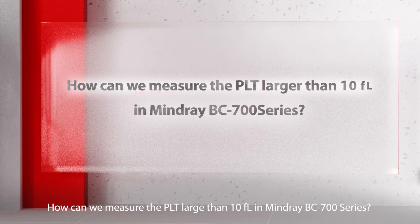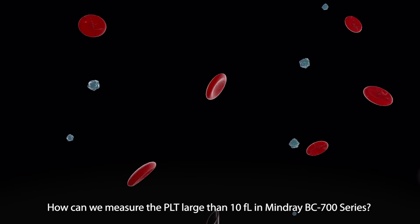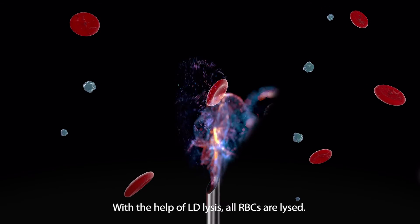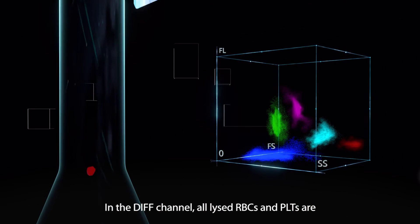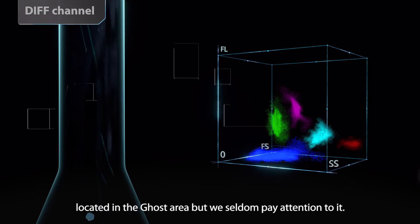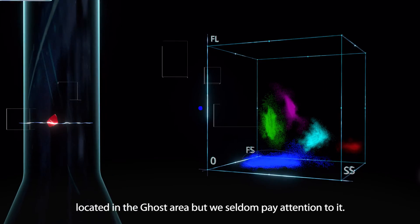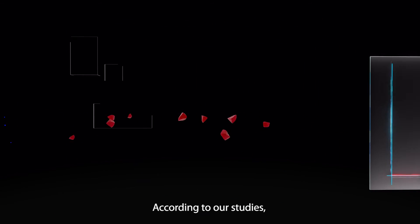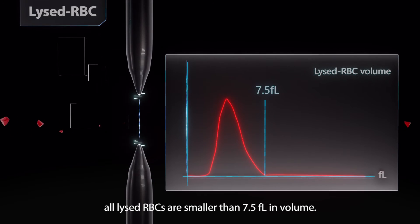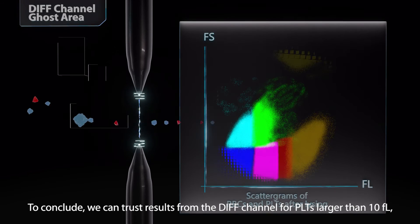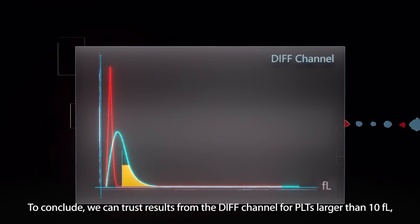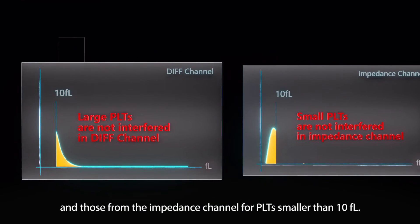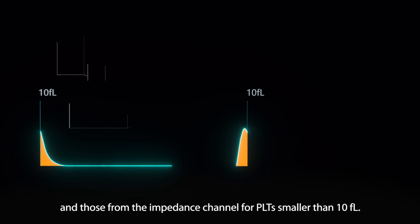How can we measure PLTs larger than 10 femtoliter in MINDRAY BC700 series? With the help of LD lysis, all RBCs are lysed. In the diff channel, all lysed RBCs and PLTs are located in the ghost area, but we seldom pay attention to it. According to our studies, all lysed RBCs are smaller than 7.5 femtoliter in volume. To conclude, we can trust results from the diff channel for PLTs larger than 10 femtoliter, and those from the impedance channel for PLTs smaller than 10 femtoliter.